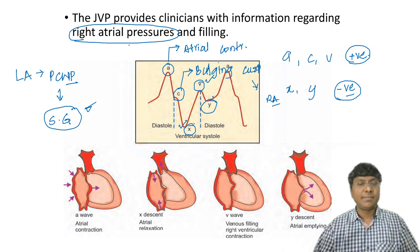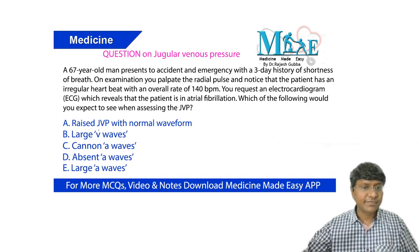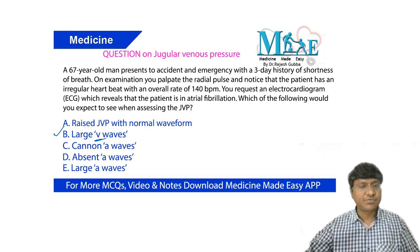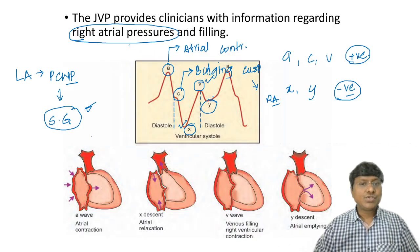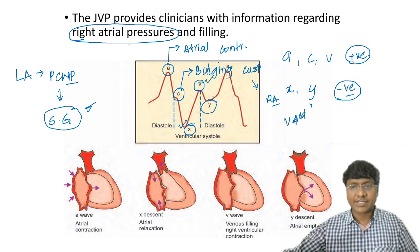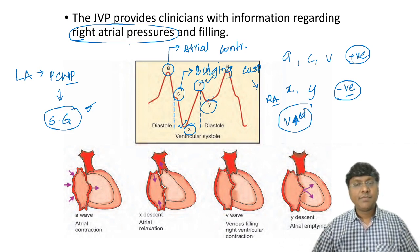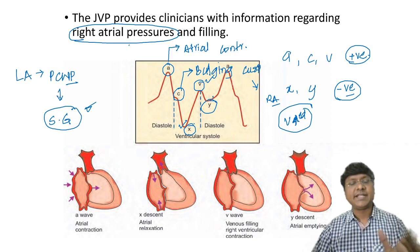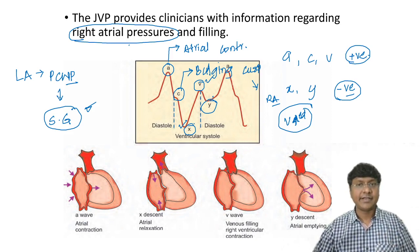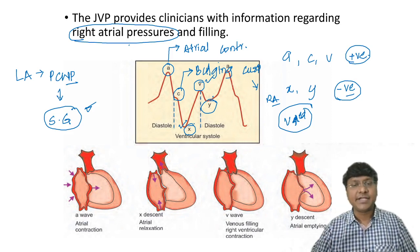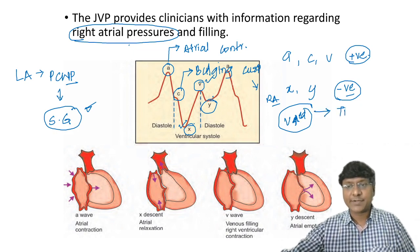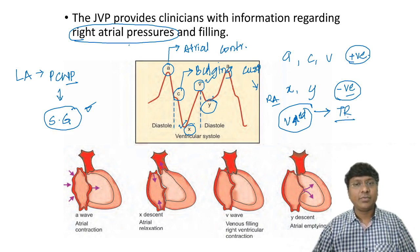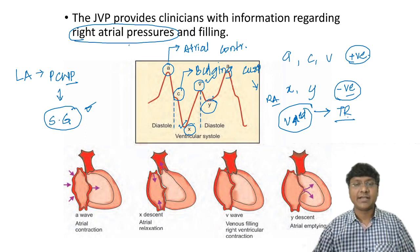The question covers abnormalities of the A wave and the V wave. Taking the V wave first: it is due to venous filling. If the V wave is increased, there is additional blood entering the right atria. This happens in patients with tricuspid regurgitation, where blood from the ventricle leaks back into the atria, increasing the amplitude of the V wave. So large V waves are seen in tricuspid regurgitation.